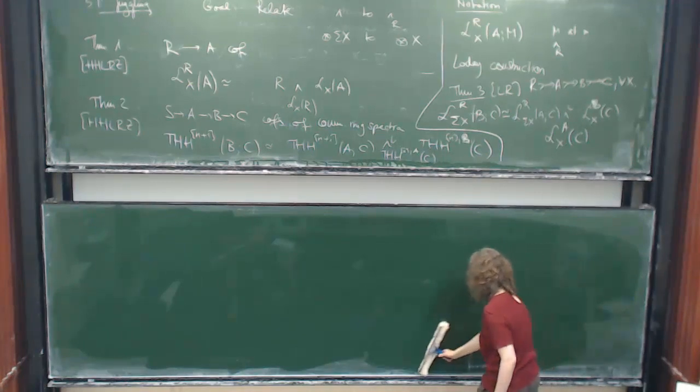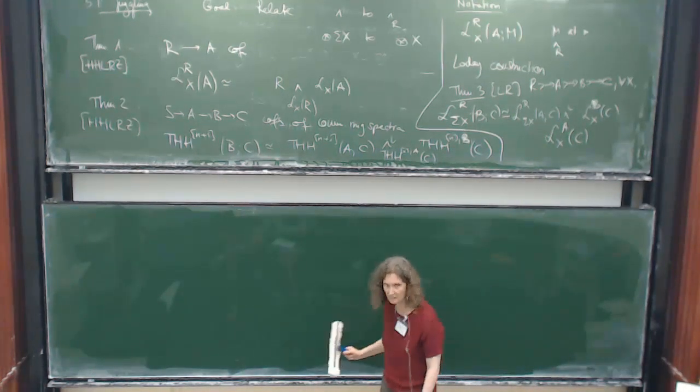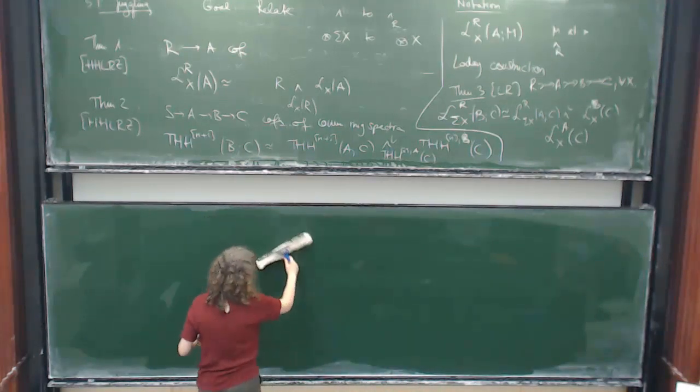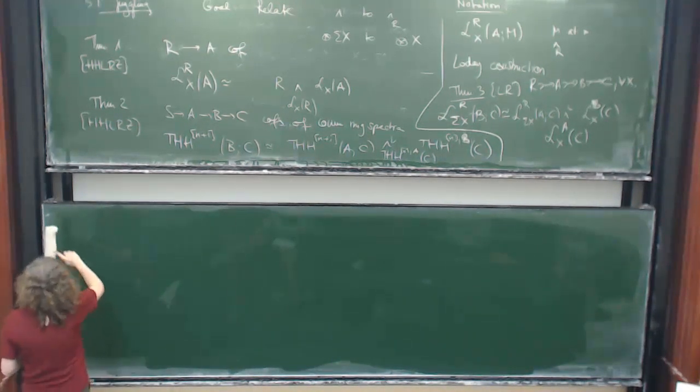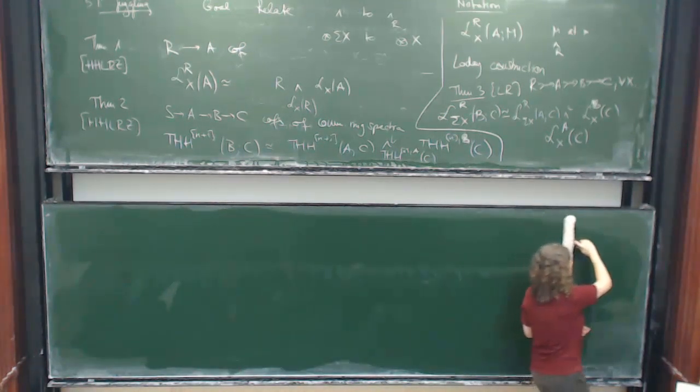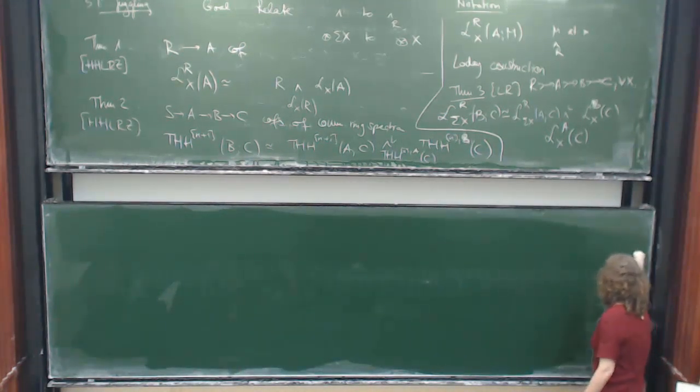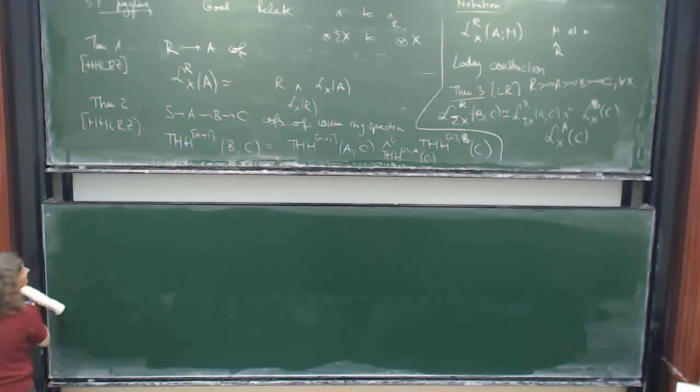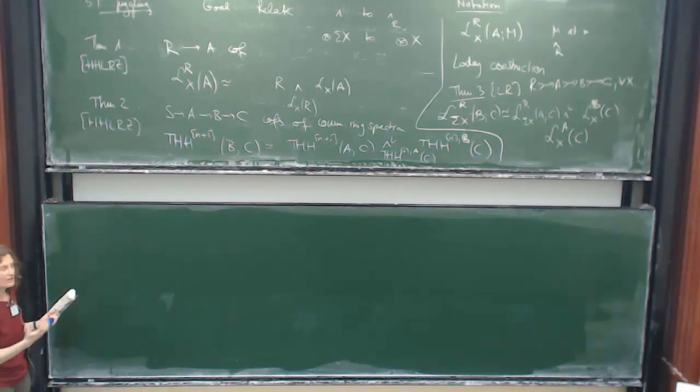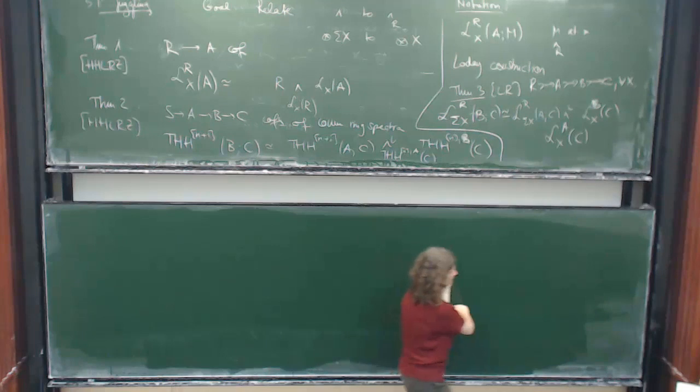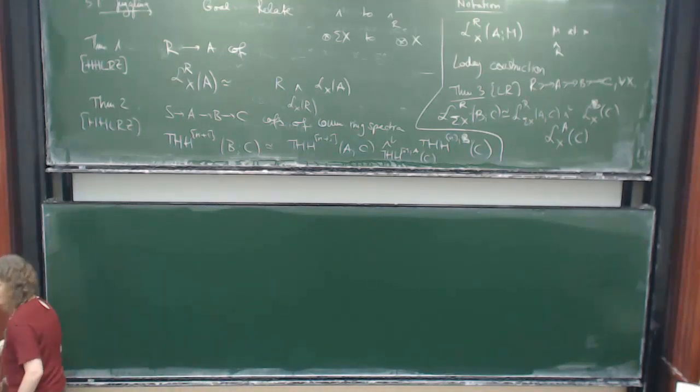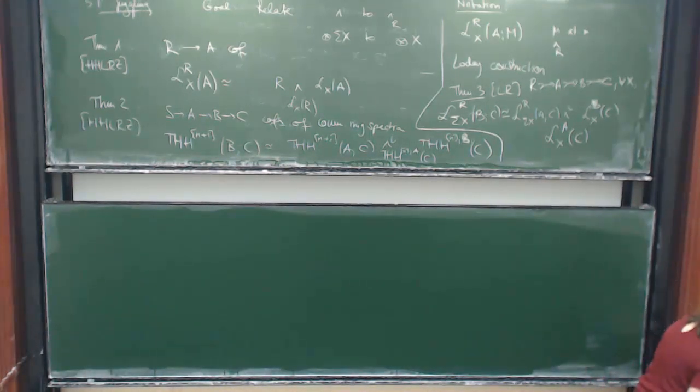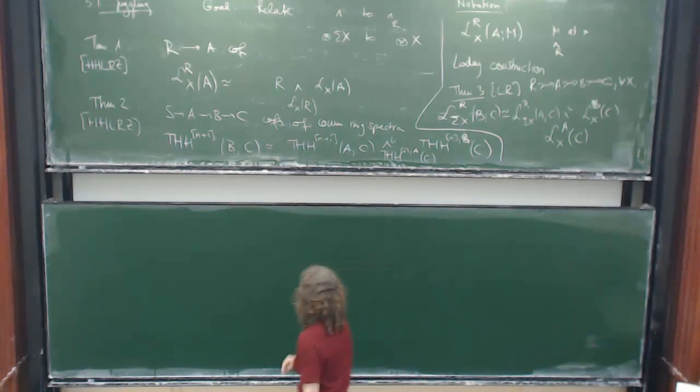So just let me add a remark. If you take X to be non-connected, say S0, which is the case that we love most, then the module structures turn out to be quite intricate. So quite often you can calculate the single terms, then you get a Künneth spectral sequence, and you think you're done. But the module structure that you have, you're tensoring over THH. So this can be quite difficult to determine.